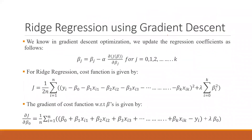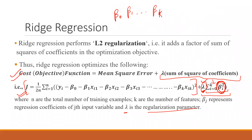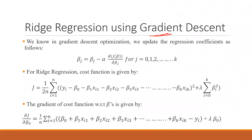Now we discuss Ridge regression using gradient descent. The update rule for beta is: subtract alpha — the learning rate — multiplied by the partial derivative of the cost function with respect to beta. The cost function includes both the mean square error term and the added L2 regularization term: Lambda times the sum of squares of coefficients.